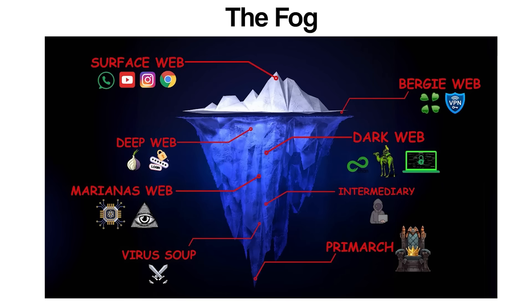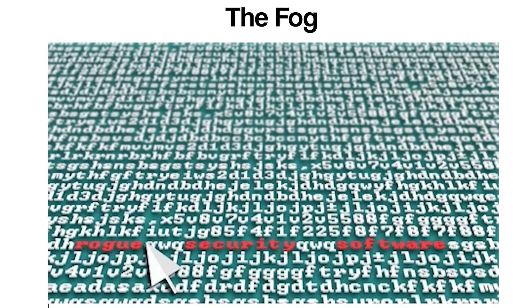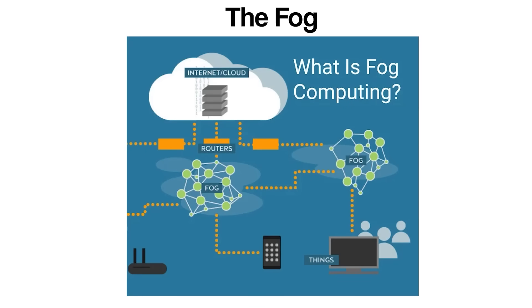This layer is said to exist beneath all known or theorized layers of the web, representing a zone filled with rogue code, self-replicating viruses, corrupted data fragments, and abandoned software. The name virus soup paints a vivid image of this layer — a swirling mass of outdated, fragmented, or malicious digital content. In theory, this layer consists of unmanaged data and code that were once active parts of higher web layers but have since decayed, mutated, or been abandoned. Some believers of the concept claim that viruses and self-replicating bots drift endlessly in this layer, infecting any accessible system that drops too deeply into the network's unregulated regions.